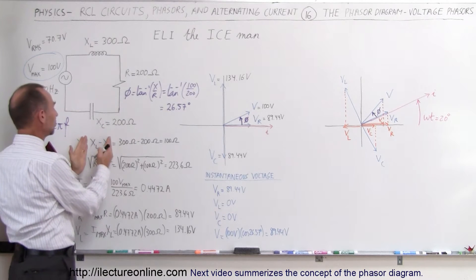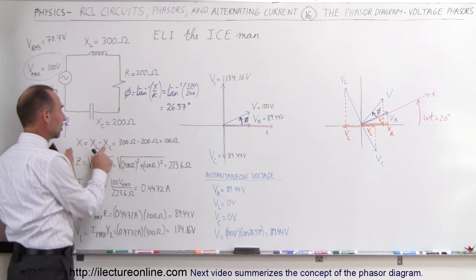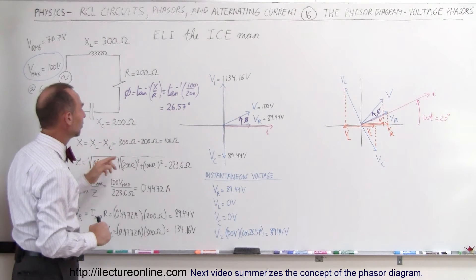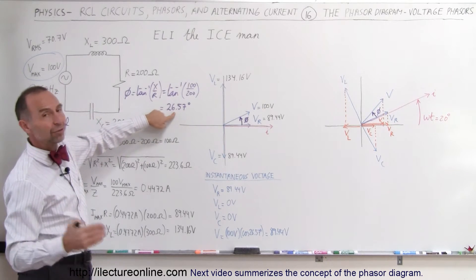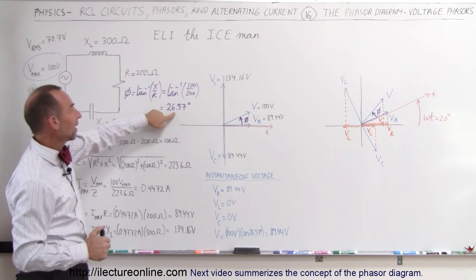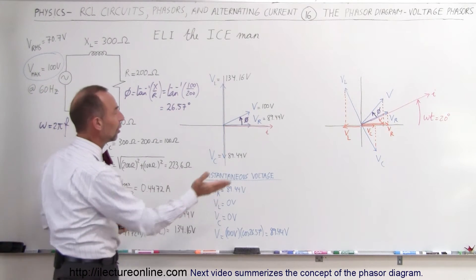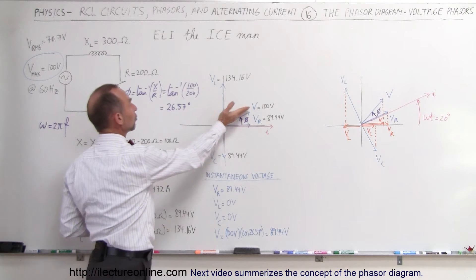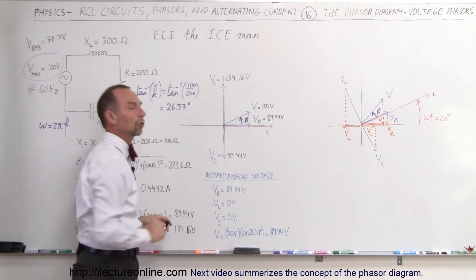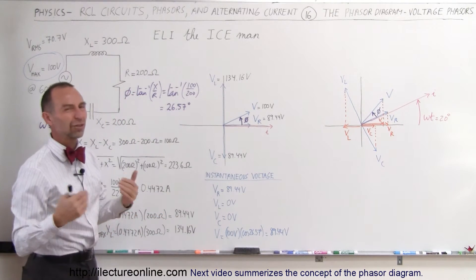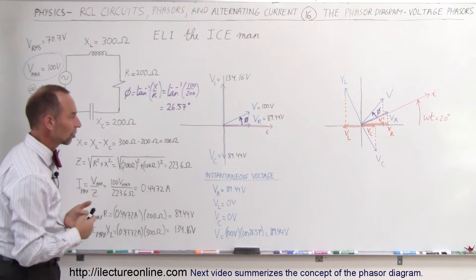The phase angle is the arctangent of the reactance divided by the resistance. Remember the reactance is simply the difference between inductive reactance and capacitor reactance. By plugging those numbers in, we get an angle of 26.57 degrees, which means in this circuit the voltage is 26.57 degrees ahead of the current. So it's an inductive-acting circuit.